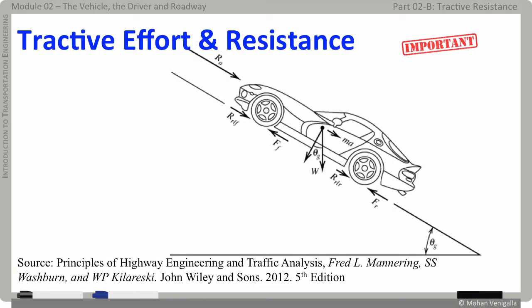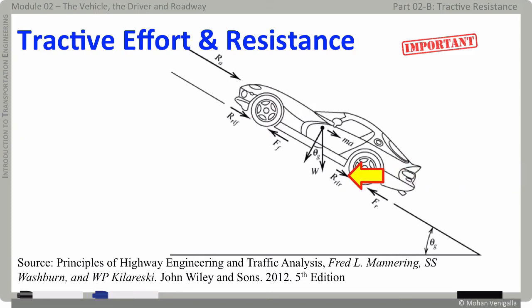Let's see how and where these forces act on the vehicle. The mass of the vehicle holds it back in direct proportion to acceleration, represented by MA, acting at the center of gravity along the line parallel to the road surface. Aerodynamic resistance R_A acts on the front of the vehicle. Rolling resistance on front wheels is R_RLF, and on rear wheels is R_RLR. Because the vehicle is on a slope with angle theta, a component of its weight W parallel to the road surface acts against forward motion — this is grade resistance R_G.